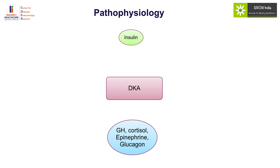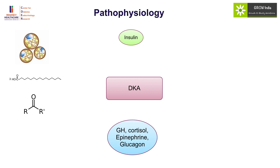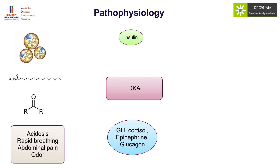The first and major hallmark of diabetic ketoacidosis is absolute or relative insulin deficiency, which triggers the lipolysis pathway in which free fatty acids are produced and then converted into ketones. This ketoacidosis is responsible for a number of presenting features of DKA in the form of acidosis, rapid breathing, abdominal pain, and fruity odor.